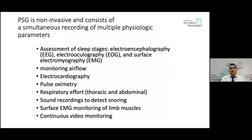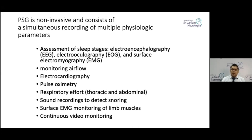Assessment of sleep stages is done using a few EEG leads, electro-oculography to detect eye movements, and chin EMG to detect muscle atonia. We also monitor airflow, have a few ECG leads, pulse oximetry, and respiratory effort monitored by thoracic or abdominal movement detectors. There is a microphone or sound recording to detect snoring, surface EMG probes on the limbs to detect limb movements, and continuous video monitoring.